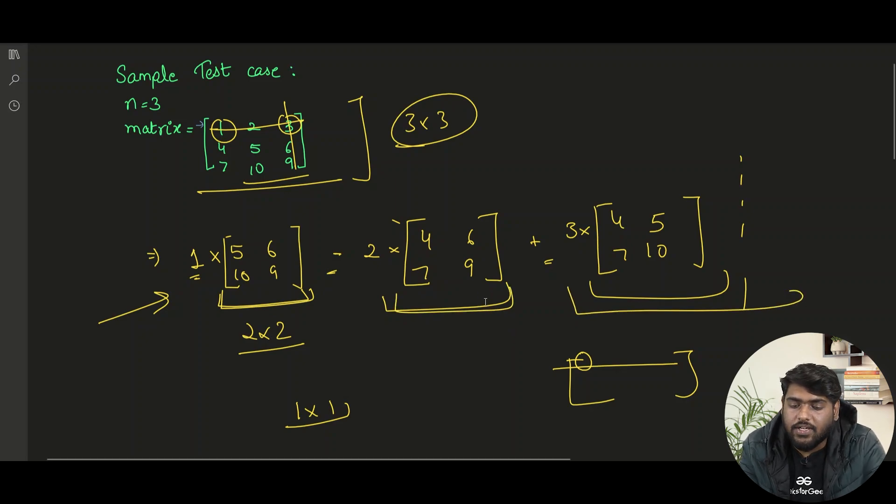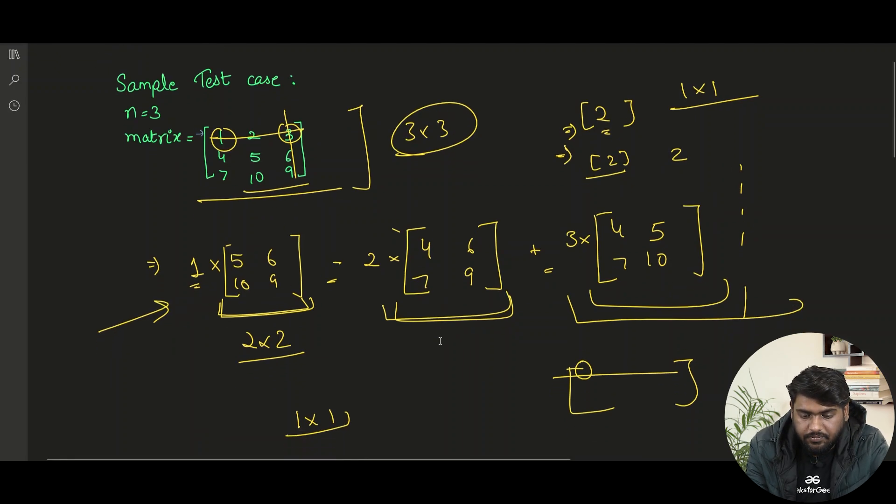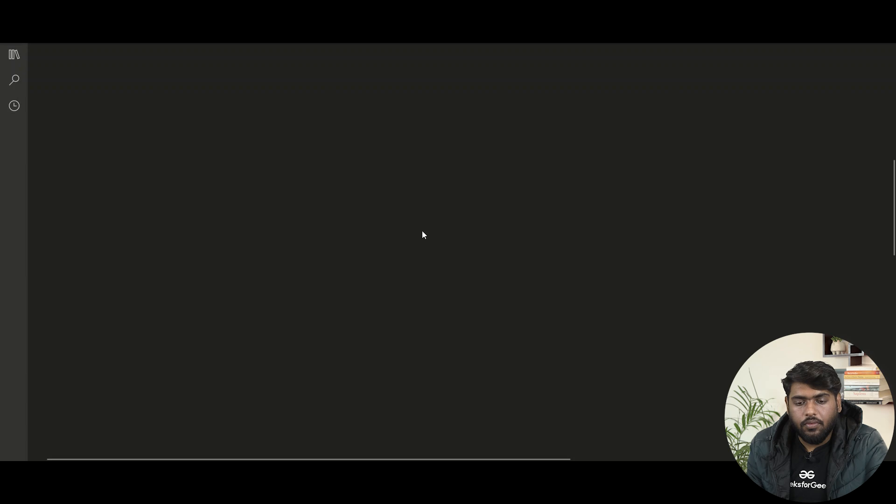Talking about the base case, what is going to be the base case? We already know if our matrix is actually just 1 cross 1, then the determinant is going to be the number itself. If we are talking about this, the determinant of this is going to be 2 as well.